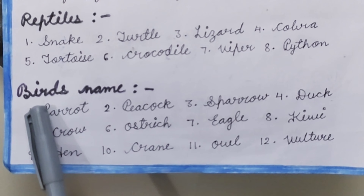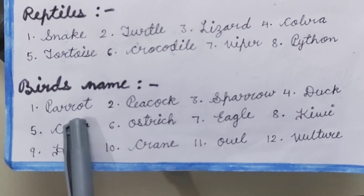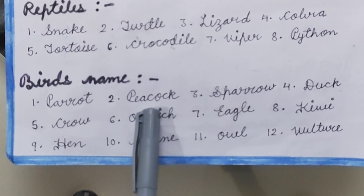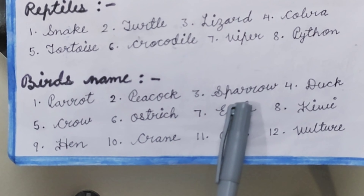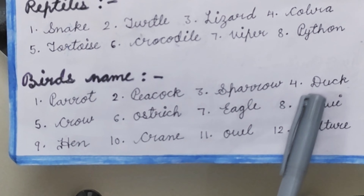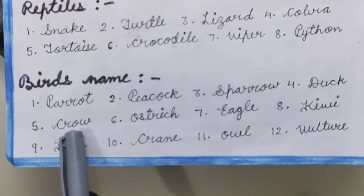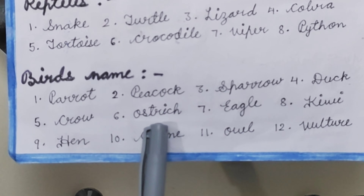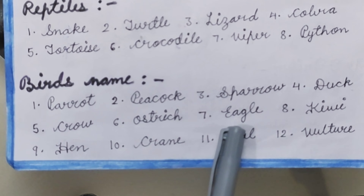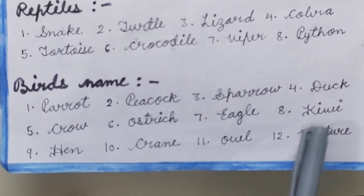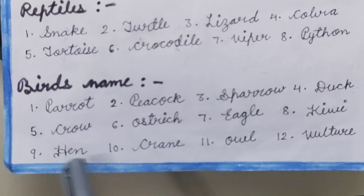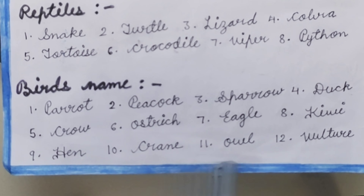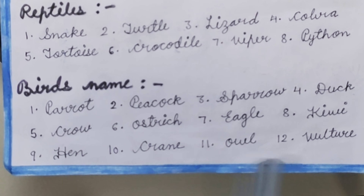Bird's Names: Parrot, Peacock, Sparrow, Duck, Crow, Ostrich, Eagle, Kiwi, Hen, Crane.